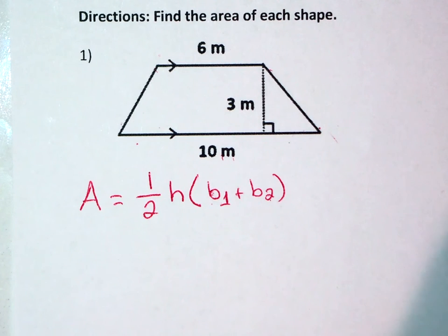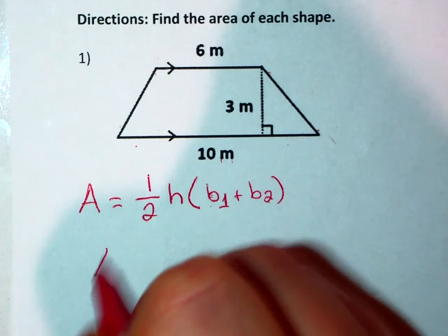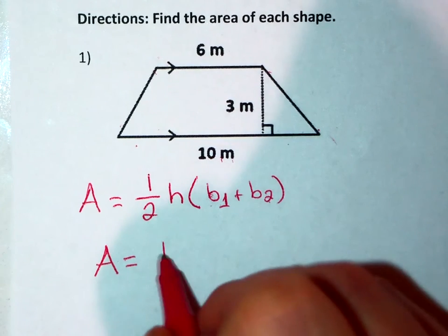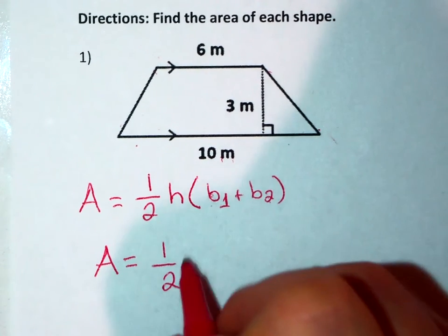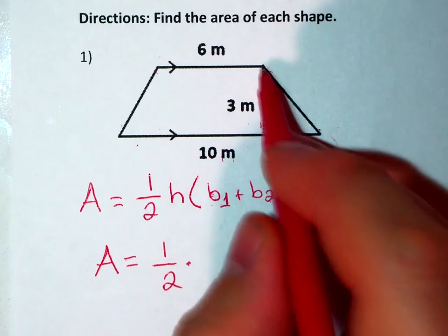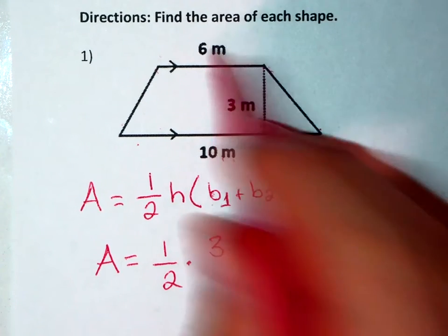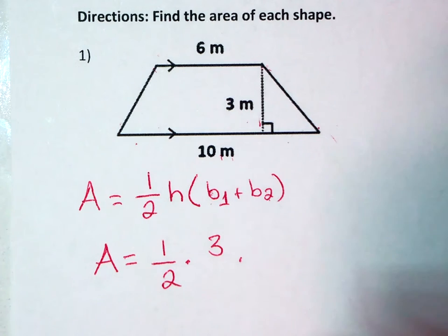Either way I'm going to get 16 for my answer. So A equals 1/2 times my height which was indicated here is 3 times 10 plus 6 is 16.